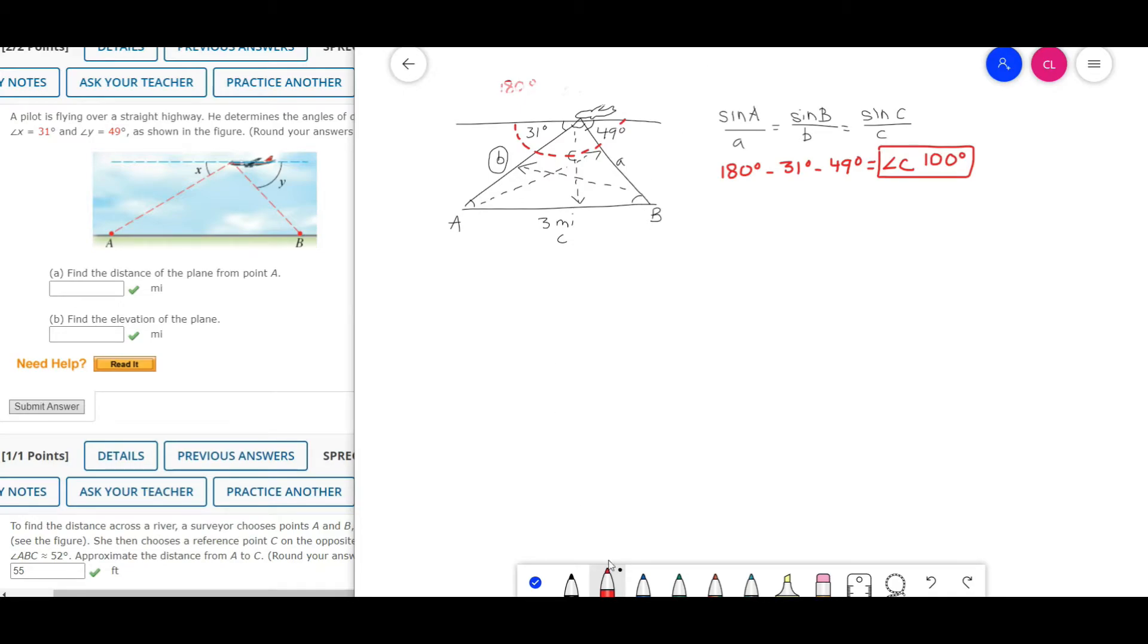Now we can get a ratio going. We have one ratio already, angle C to side C, so we have this so far. We need more.